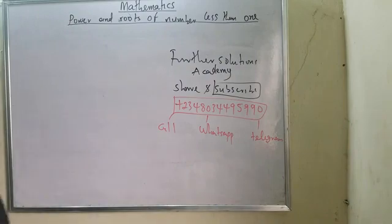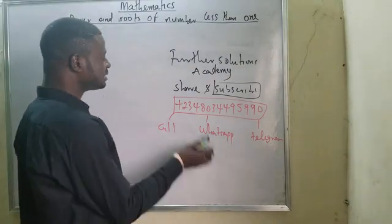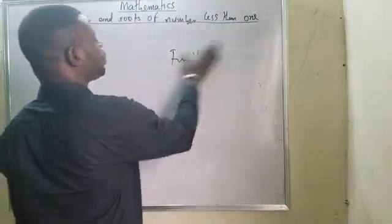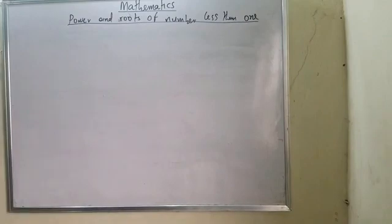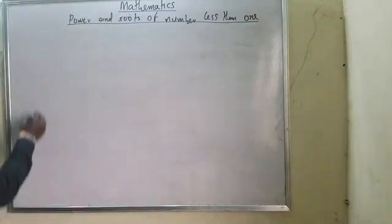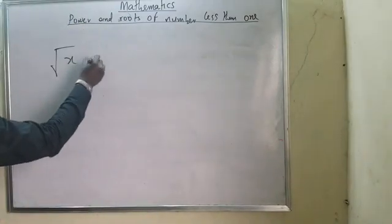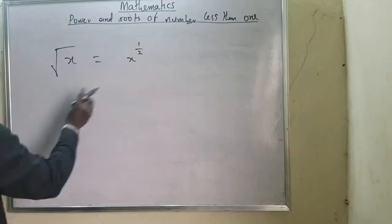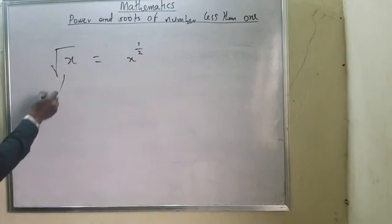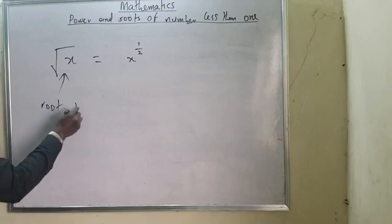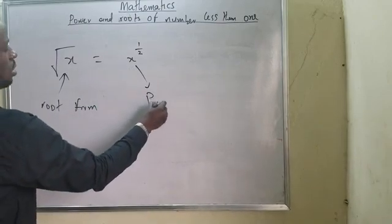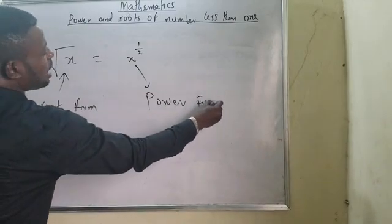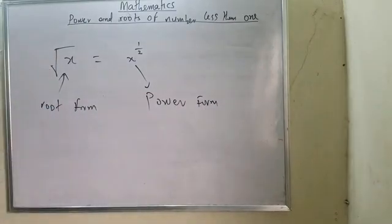In this video I want to be walking you through powers and roots of numbers less than one. We have been working on log tables. Now, when you have the root of x, it equals x to the power one over two. This is called root form, and this is called power form.